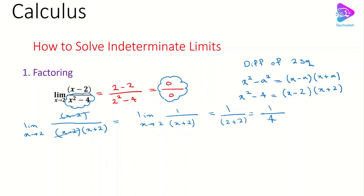To summarize: we first plugged in the value we were approaching, noticed it was the indeterminate form 0 over 0, then used algebraic simplification — specifically factoring the denominator and canceling common terms — to obtain a form we could evaluate directly. In most cases when dealing with rational functions that yield an indeterminate form, factoring is the approach to use.